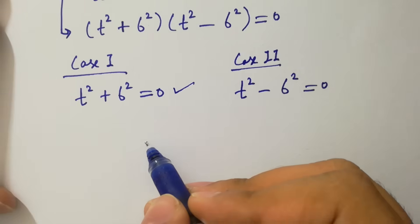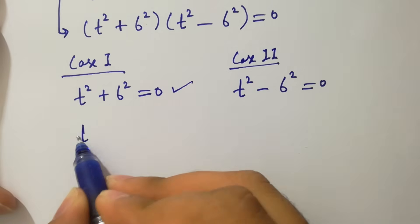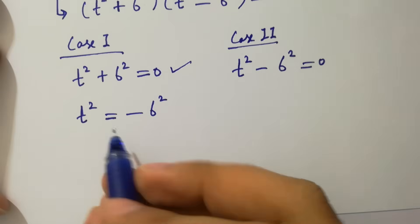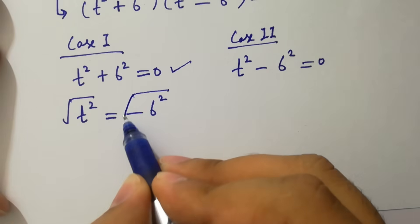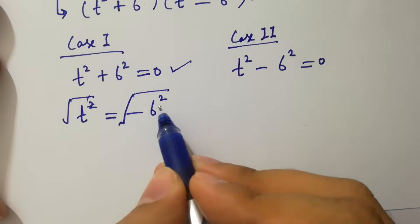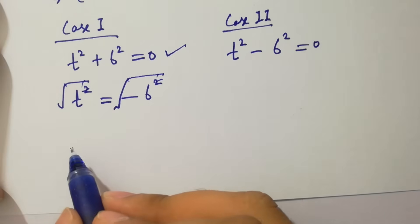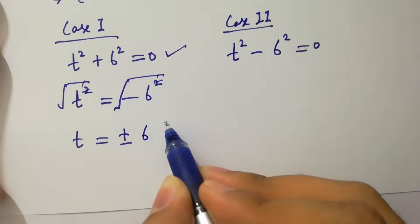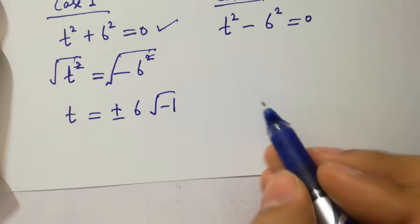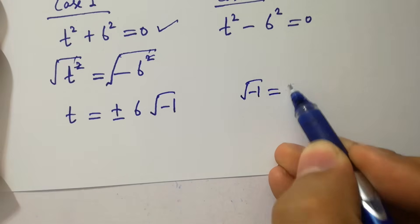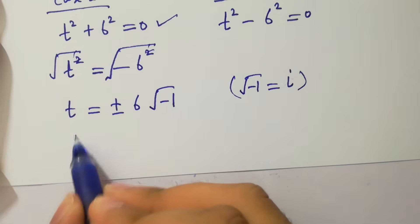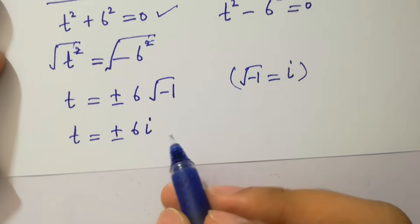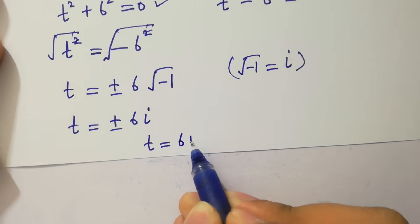And the second case is t square minus 6 square equal to 0. From case one, we have t square equal to minus 6 square. Taking square root on both sides, the square cancels from the square root, so we have t equal to plus minus 6 times square root of minus 1. Since square root of minus 1 equal to i, it will be t equal to plus minus 6i.